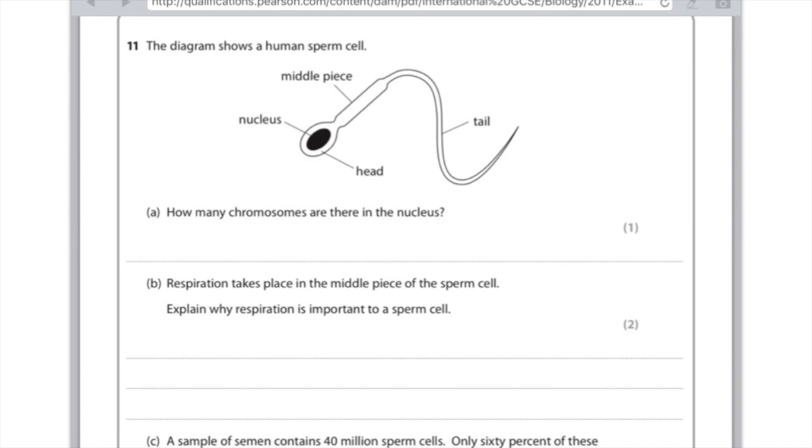Question 11. The diagram shows a human sperm cell. How many chromosomes are there in the nucleus? Well remember, gametes such as sperm and eggs are haploid which means that they have 23 chromosomes altogether as opposed to 46. So the answer here is 23. Respiration takes place in the middle piece of the sperm cell. Explain why respiration is important to a sperm cell. And that's because respiration generates energy which is needed to help the sperm to swim.